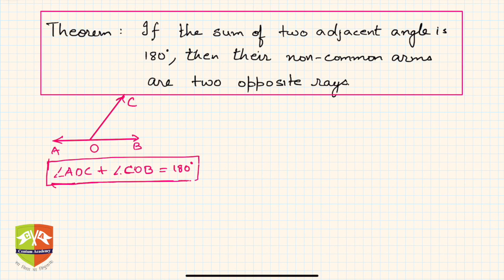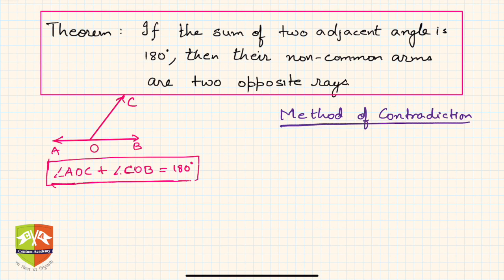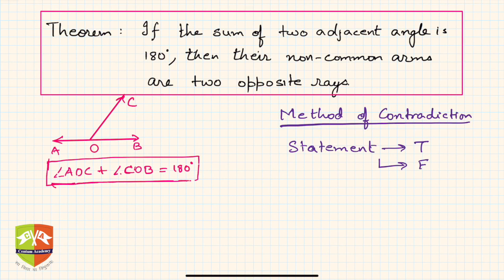We will be using something called the method of contradiction. What does this method mean? For any statement, there are only two possibilities: the statement is either true or it is false. If you start by assuming the statement is false and you logically arrive at a contradiction — proving the assumption was wrong — then automatically the statement becomes true. This is the logic behind the method of contradiction.